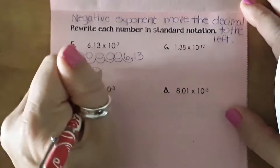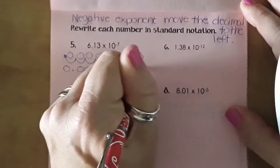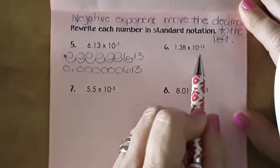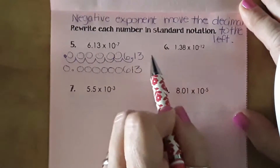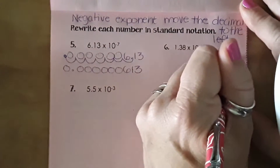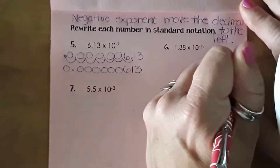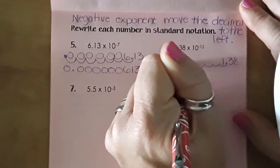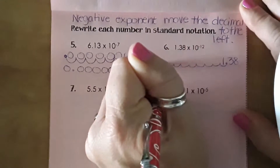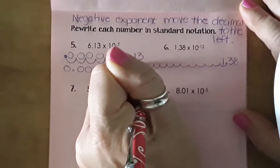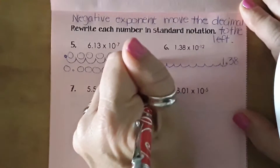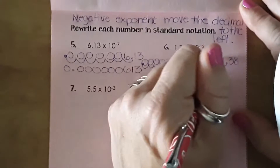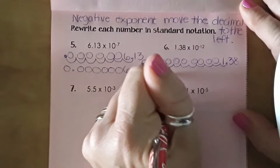Counting: one, two, three, four, five, six, seven. The empty spaces get zeros. Rewrite the number as 0.0000000613. For the next one, I need to move twelve spaces to the left. I'm going to write my number further to the right and move it over one, two, three, four, five, six, seven, eight, nine, ten, eleven, twelve — placing the decimal and filling open spaces with zeros.